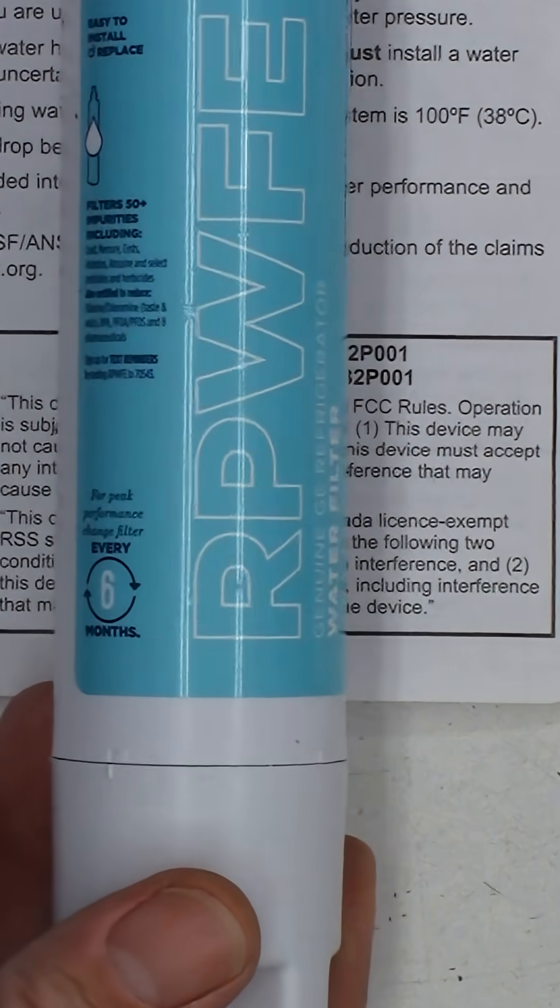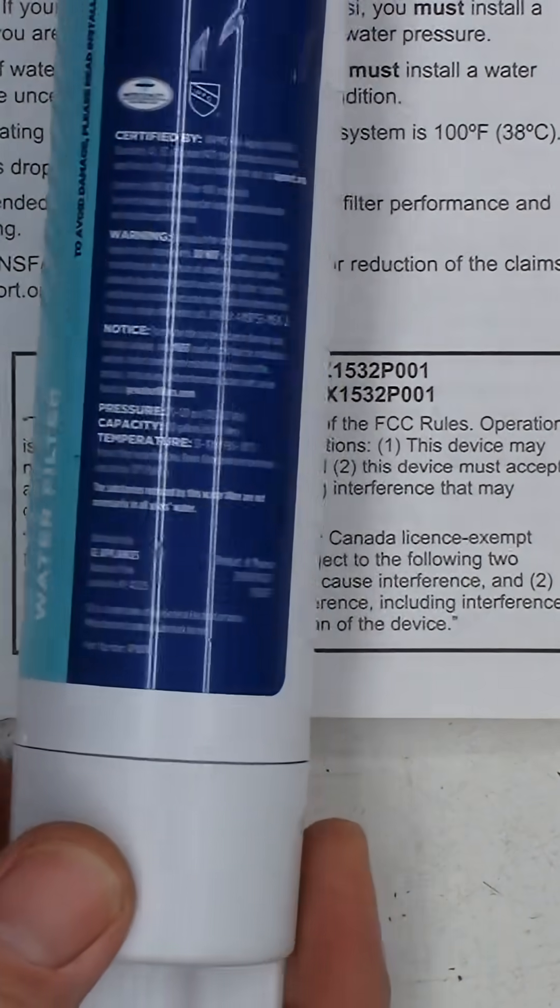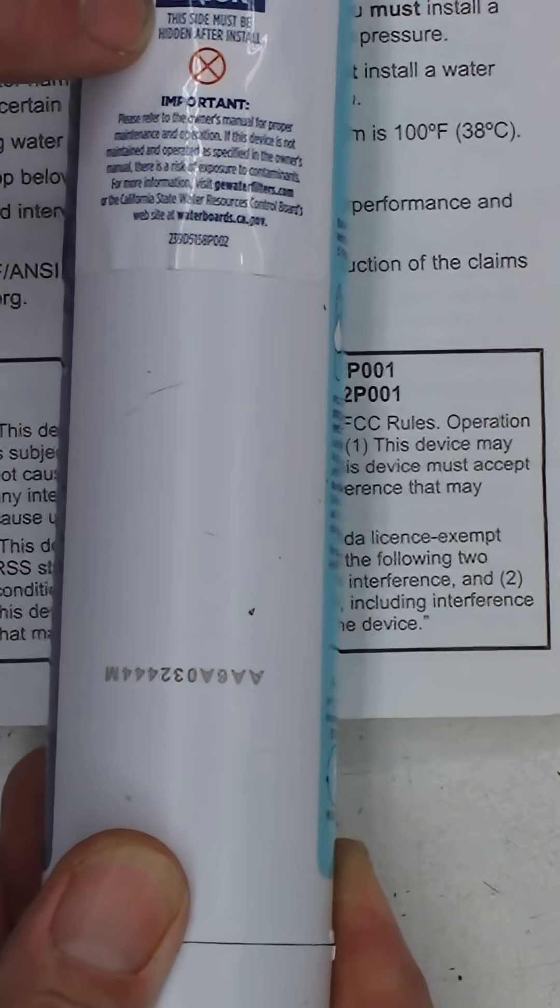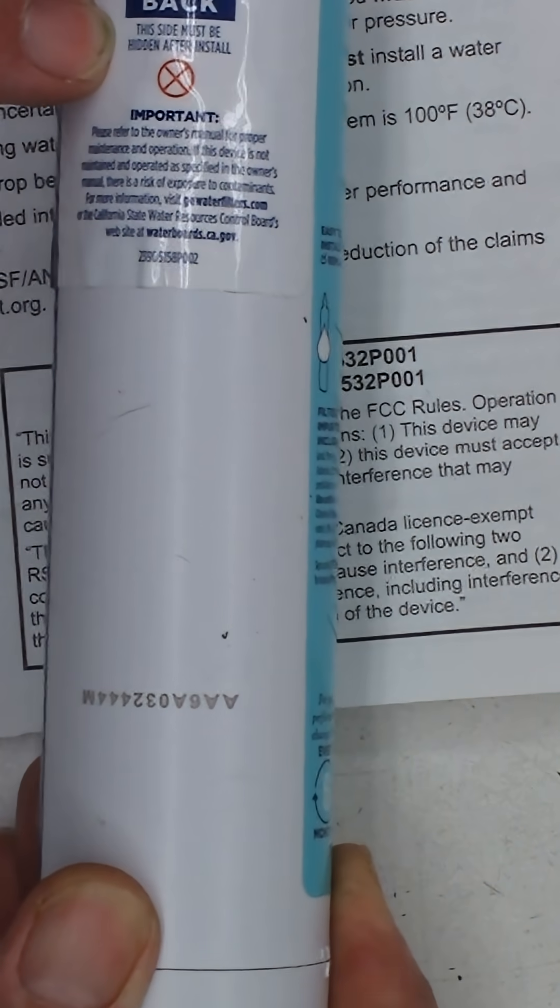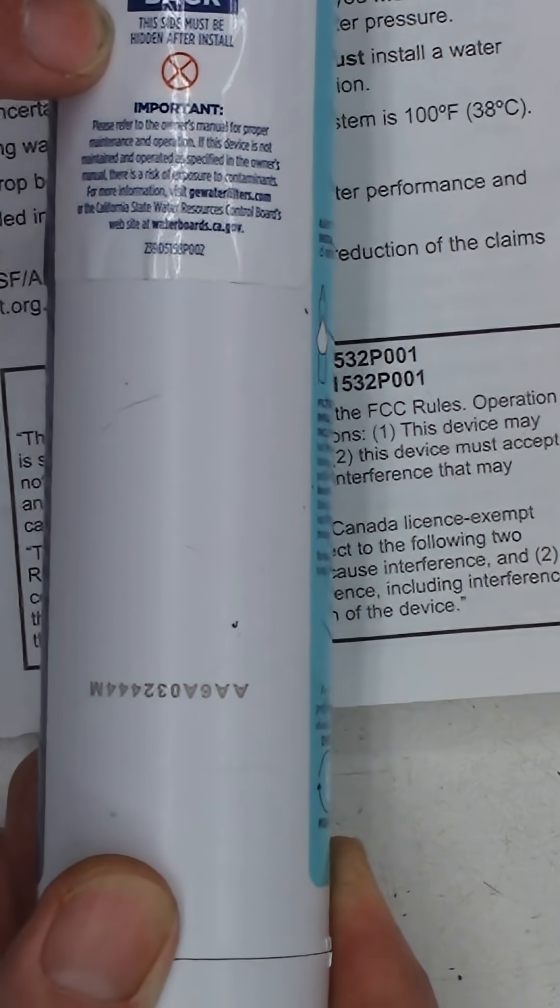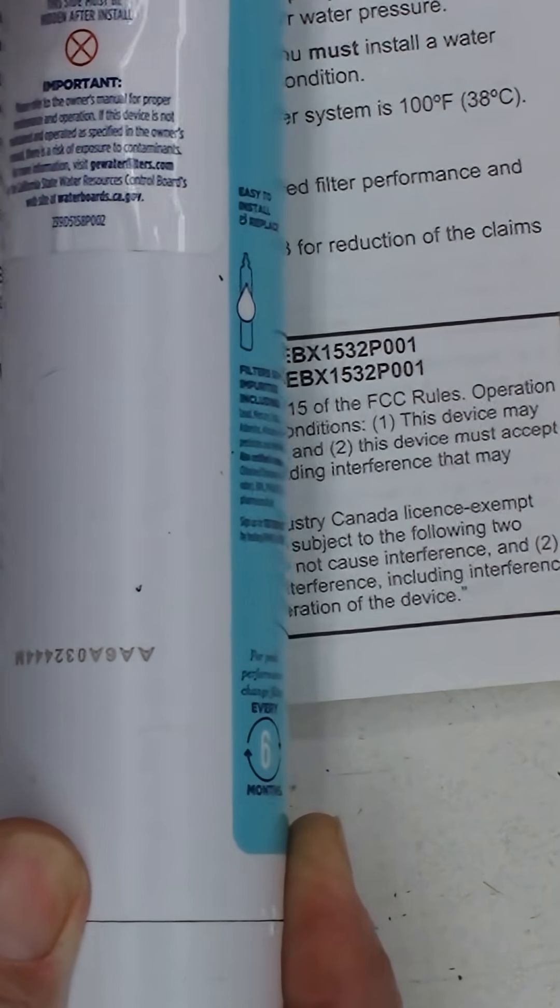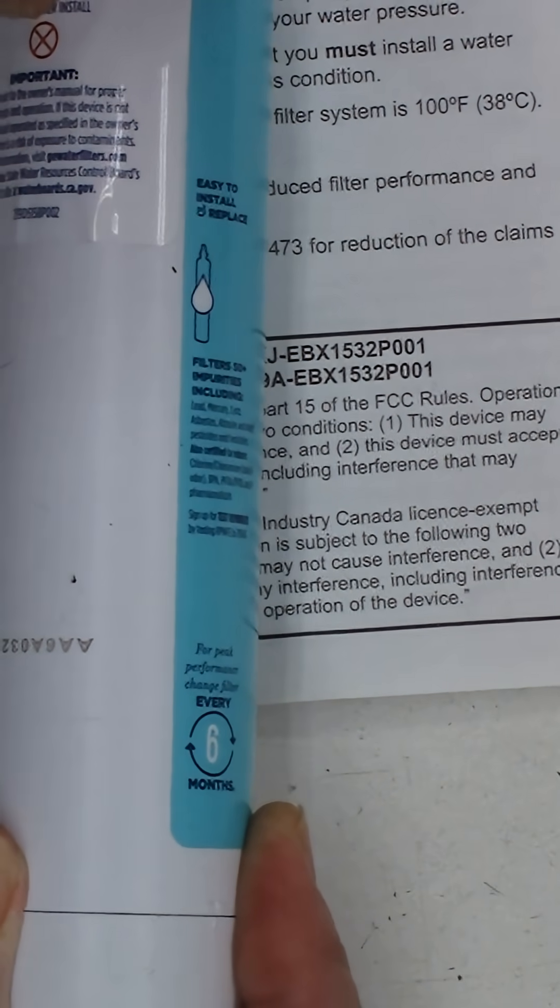Here it is. RPWFE might be upside down. Why do you think it tells you back? This side must be hidden after install because there's something underneath this. Maybe I can figure out what it is.